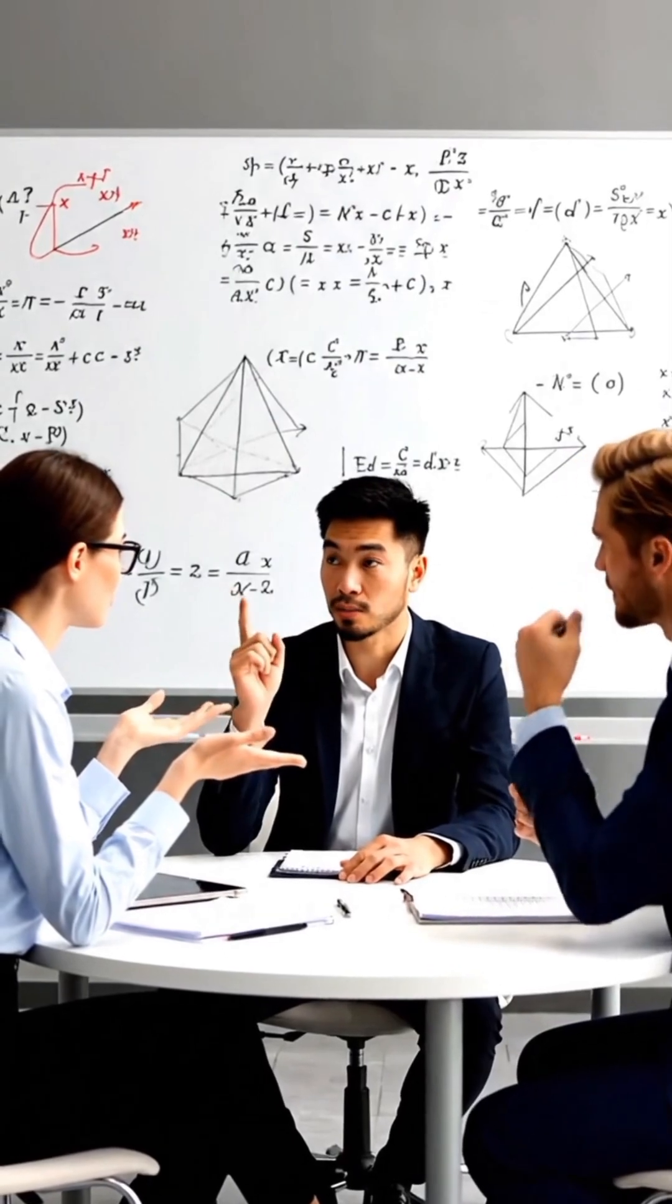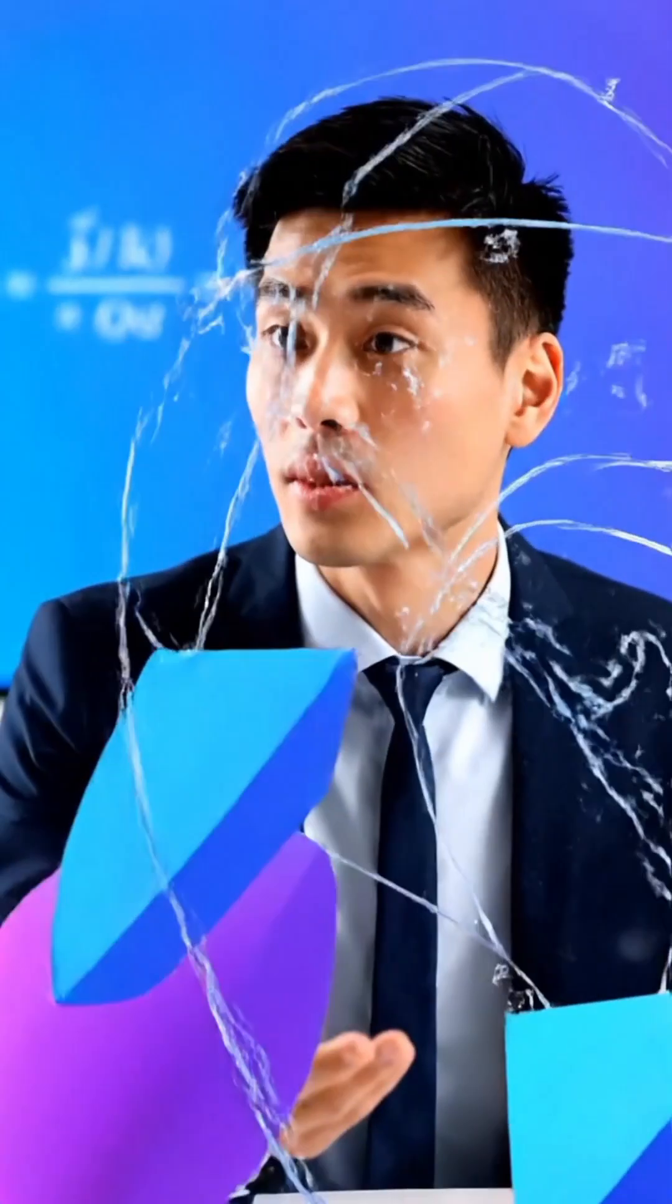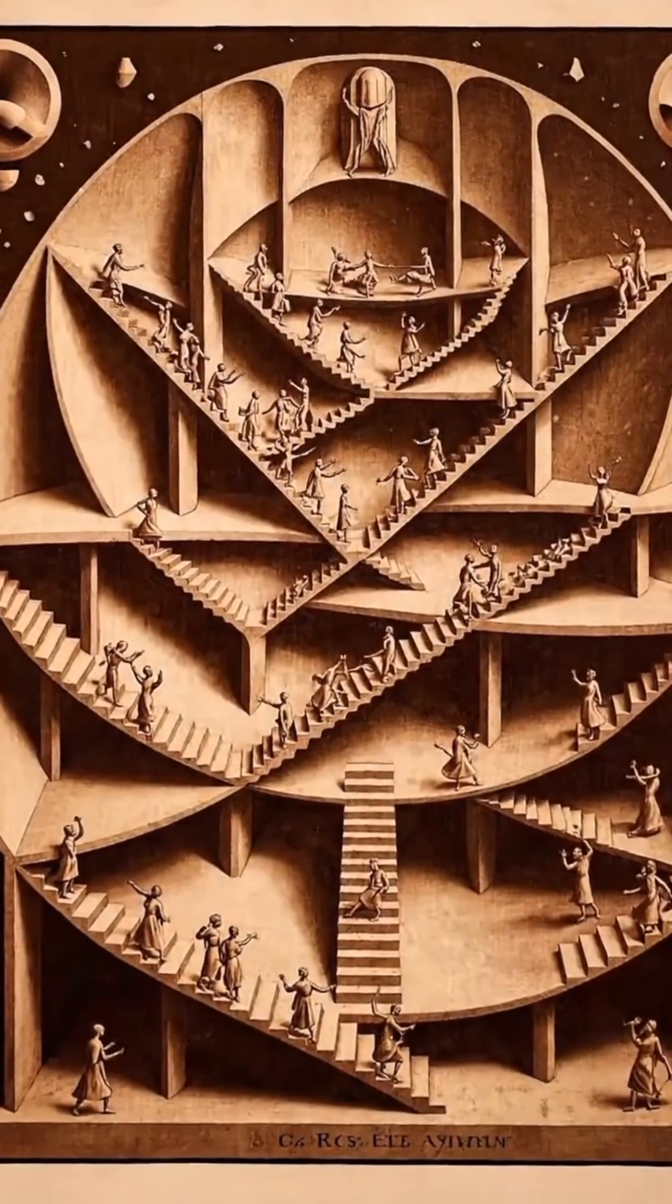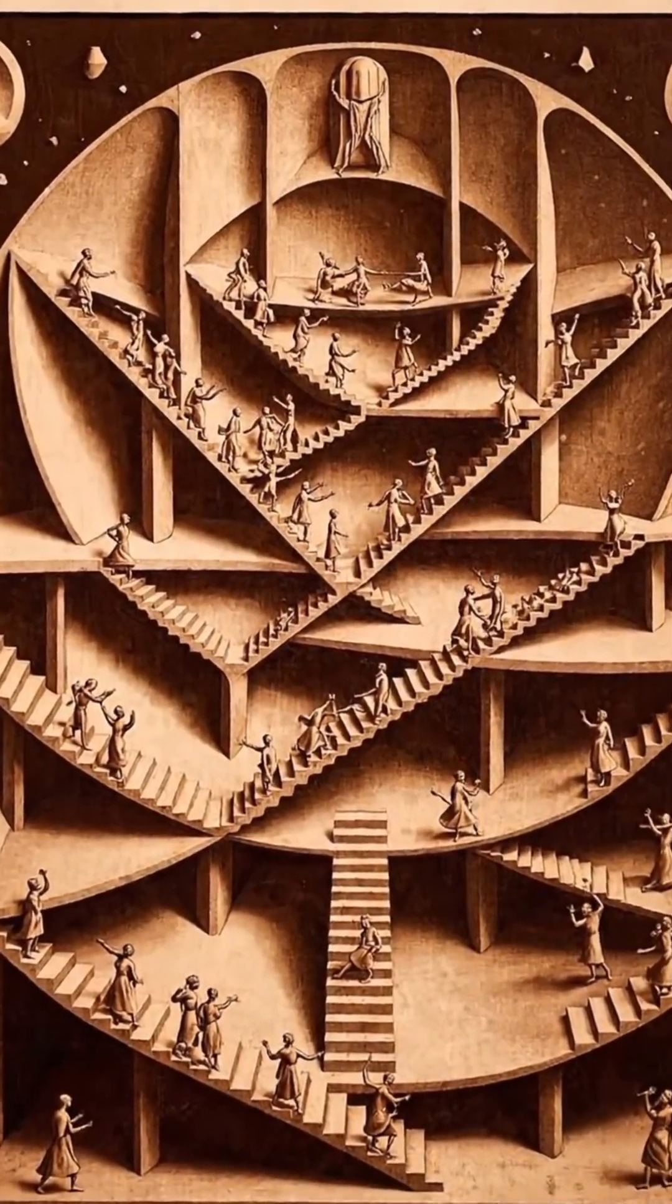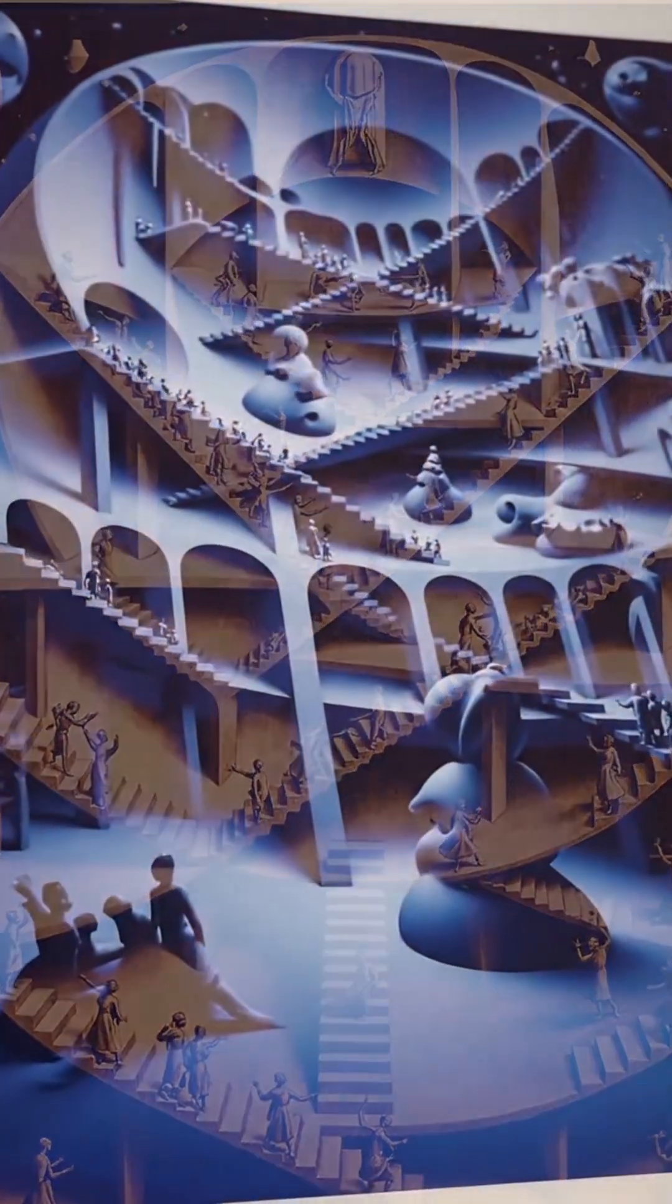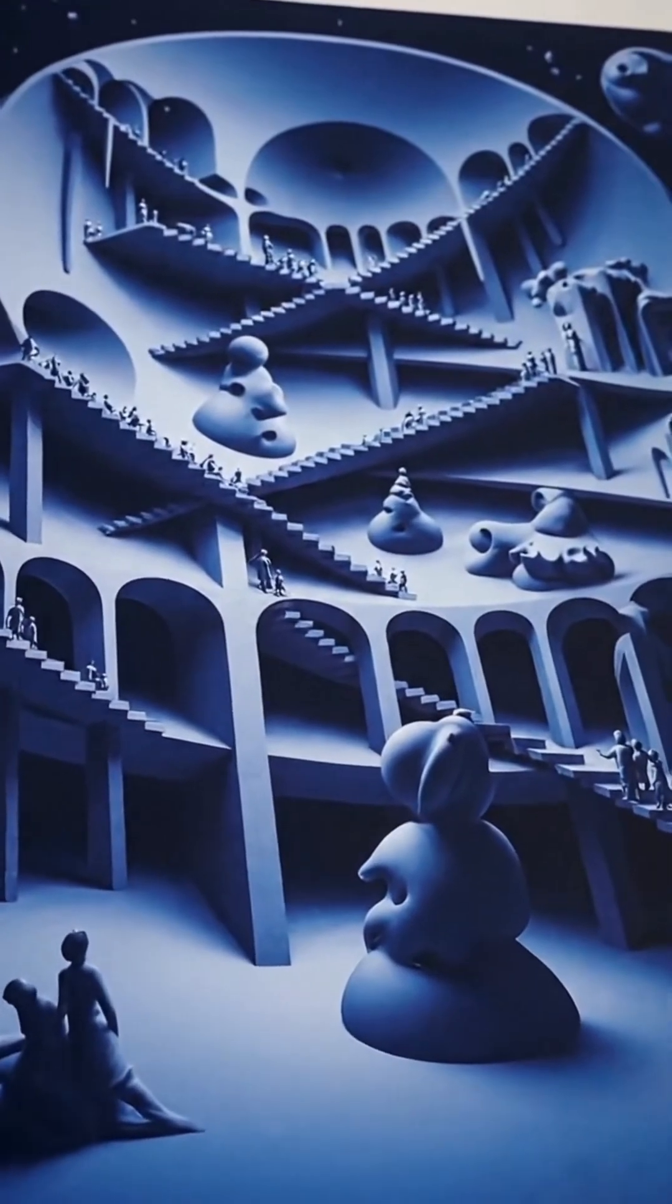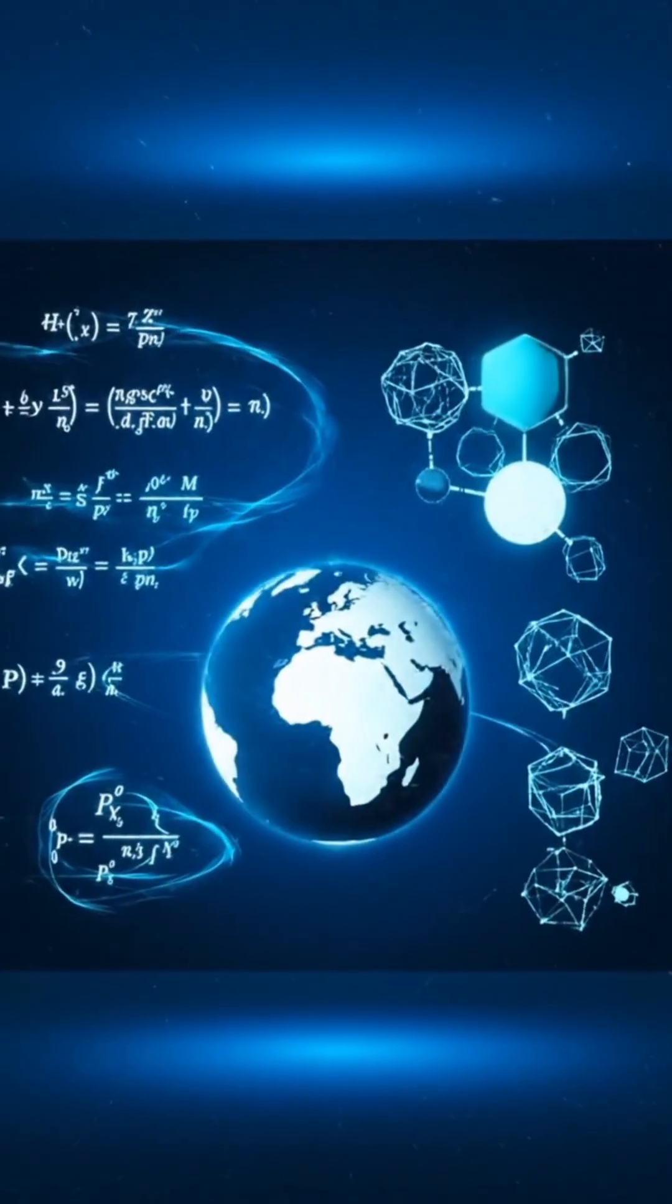The advent of non-Euclidean geometry revolutionized mathematical thought in the 19th century. Artists like M.C. Escher delved into non-Euclidean principles, creating captivating, mind-bending visuals.